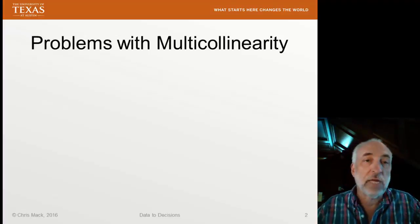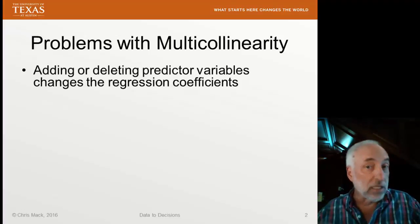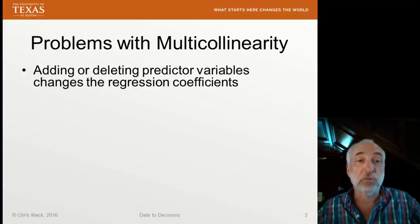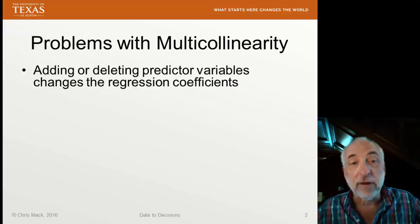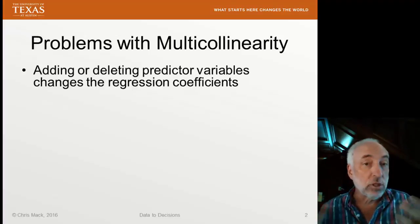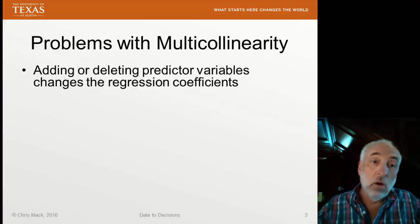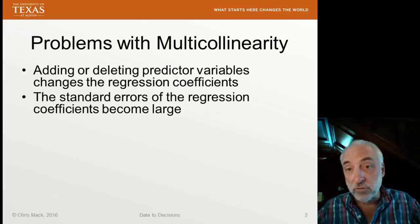We've discussed a number of problems already. If we're building a model, we might be adding or deleting predictive variables, deciding whether or not these variables belong in our model. And if we have severe multicollinearity, then adding or deleting a predictive variable will dramatically change the regression coefficients of the other variables. Also, the standard errors of the regression coefficients become very large.